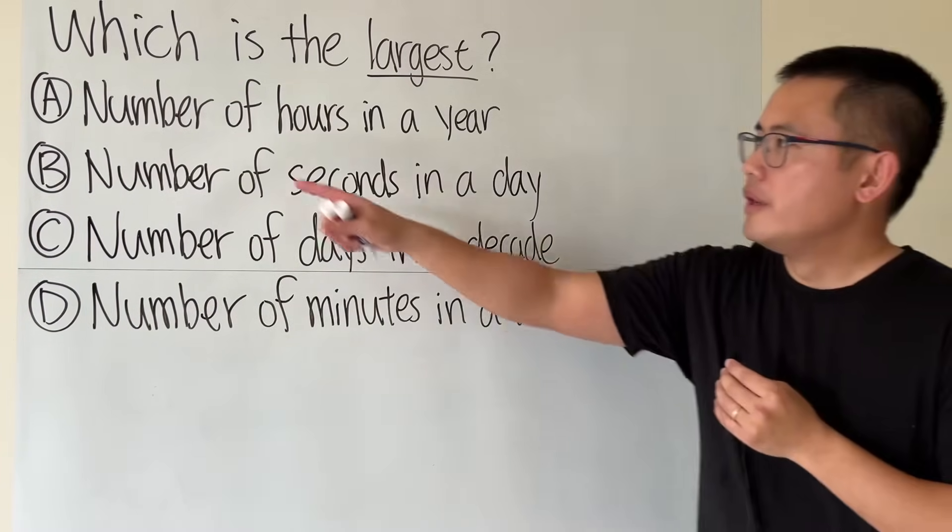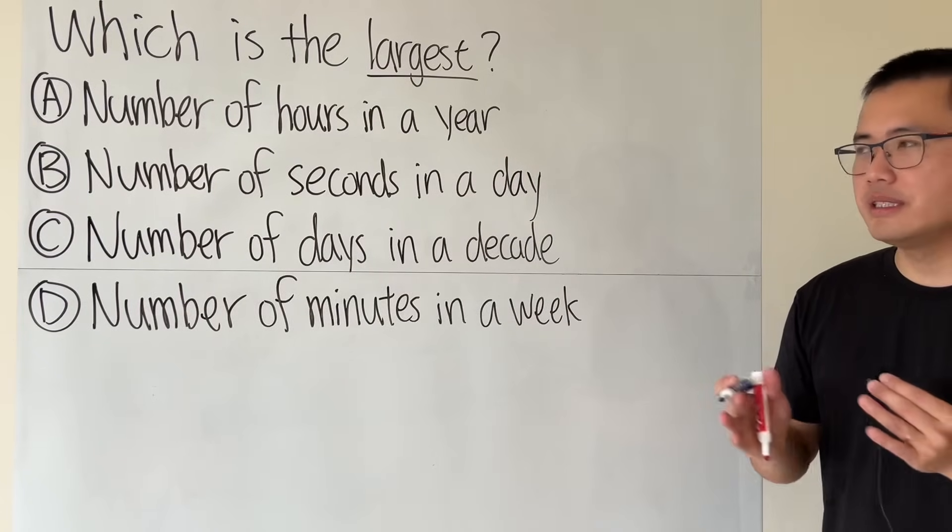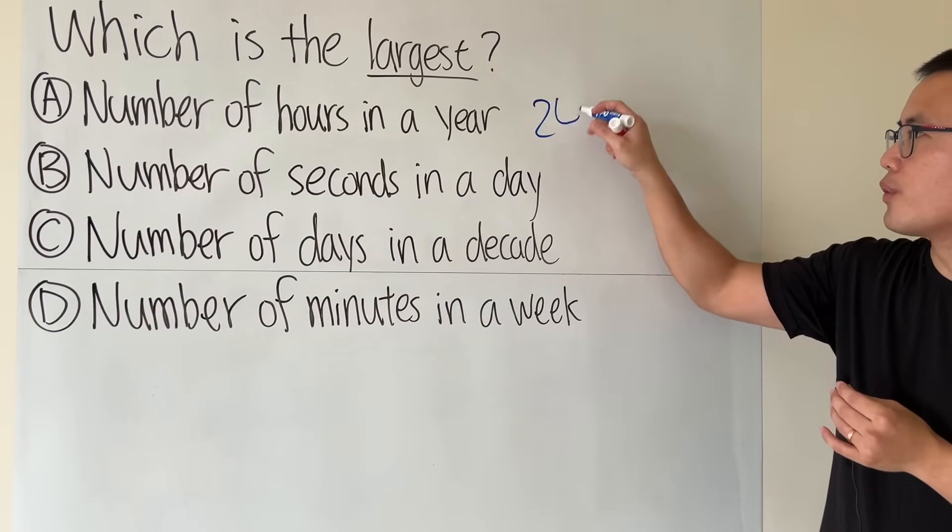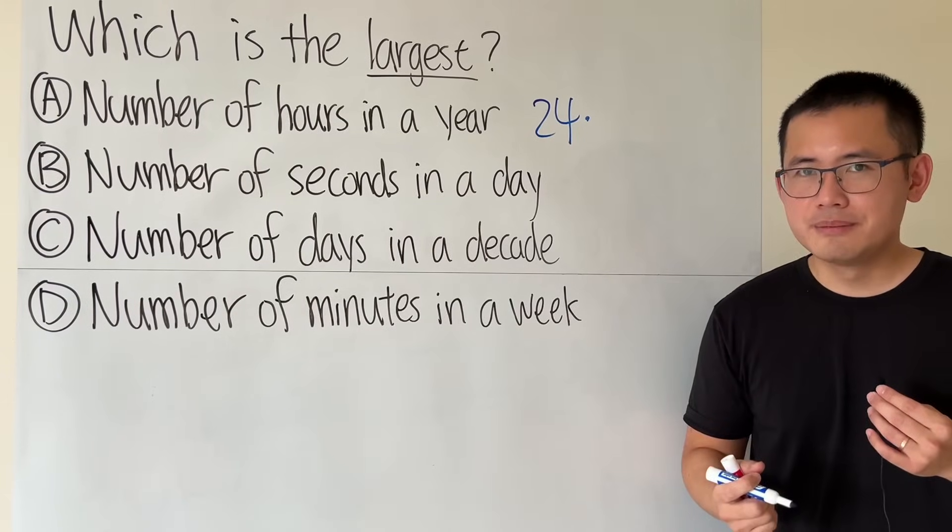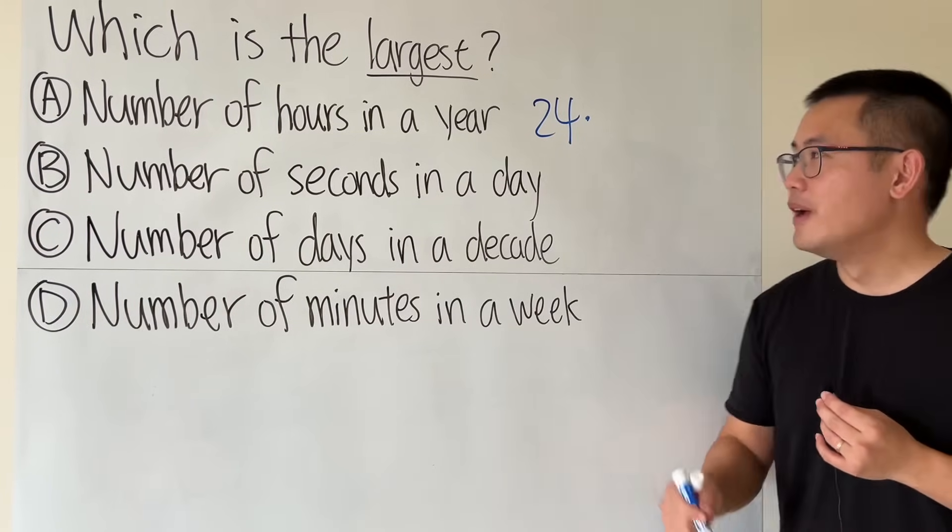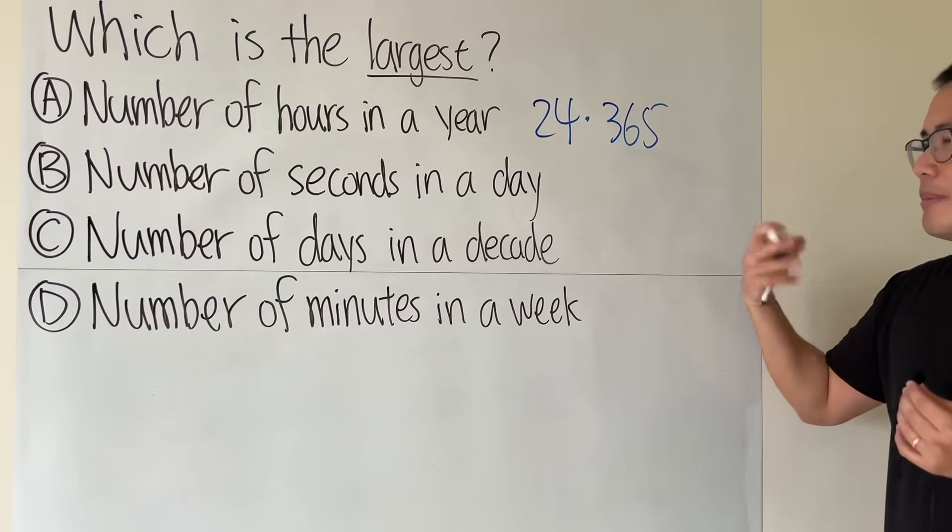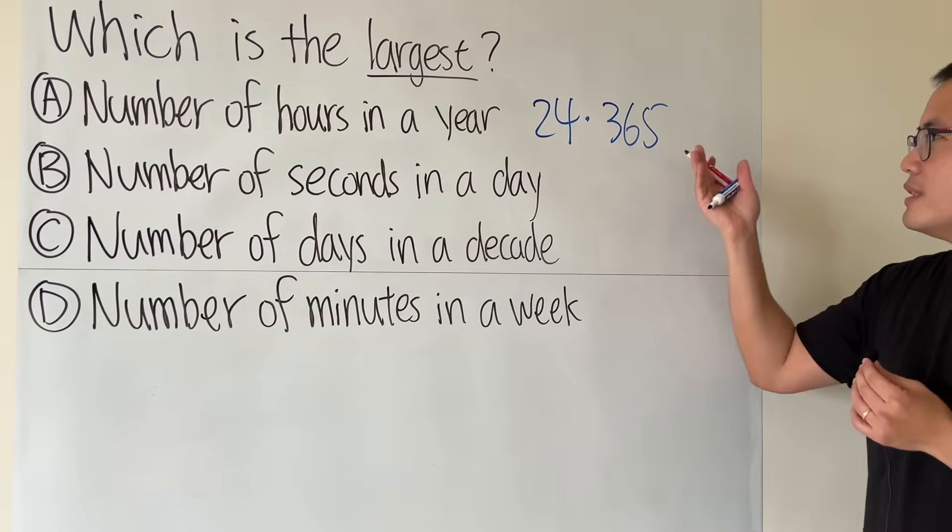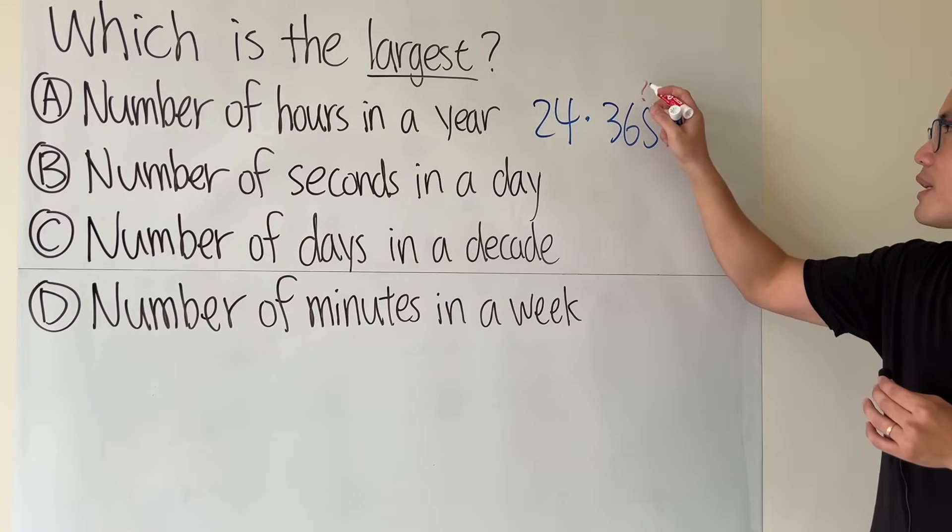First, all right, for the first one, number of hours in a year. Well we have 24 hours in a day right? So we have 24 right here and we just have to multiply by however many days there are in a year which is 365, and some people may argue 366. Let's put a little question mark right there.